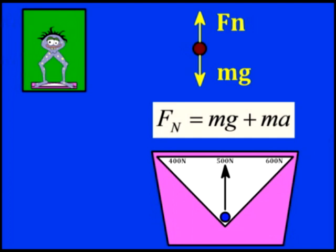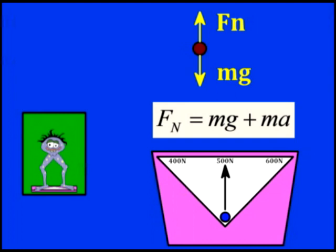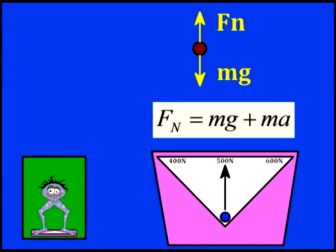As I accelerate downward, the scale briefly reads less than my weight because my acceleration is negative. As the elevator slows, I have a positive acceleration, so the scale reads more than my standard weight until I stop accelerating.